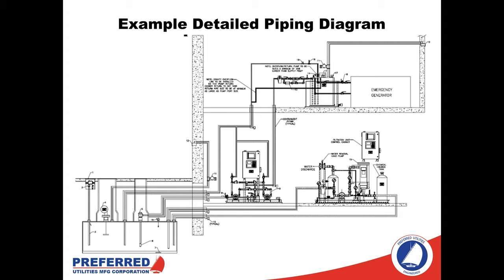Following the fuel as it moves throughout the system, we next have our duplex transfer fuel oil skid with two transfer pumps — very typical for mission-critical applications, where one pump is sized for the full function of the system and the other is a lag or backup pump. Following the fuel from here, it goes up to the generator, filling a day tank or local storage tank at the generator itself. We're going to take a closer look at each part of this system and how we would size each component, as well as the piping and valving.